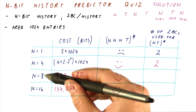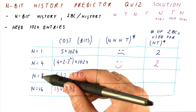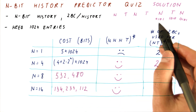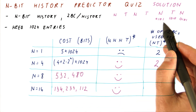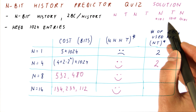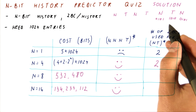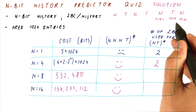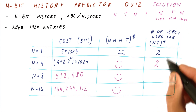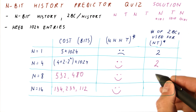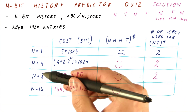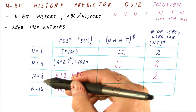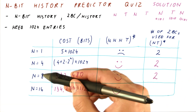If you look at the eight-bit history, the history will just alternate as 0,1,0,1,0,1,0,1 and 1,0,1,0,1,0,1,0. So we will still be using only two of now 256 two-bit counters.